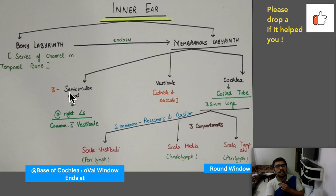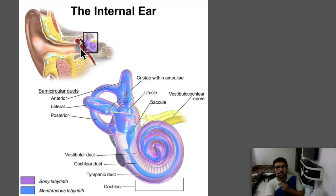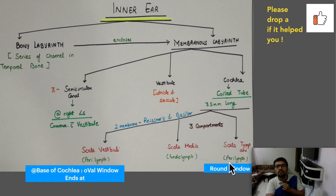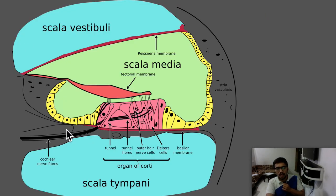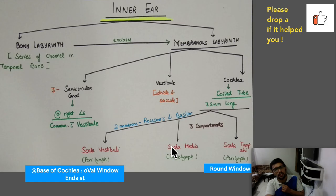The scala vestibuli ends at the oval window at the base of the cochlea approaching the middle ear — 'V for vestibuli, V for oval window.' The scala tympani ends at the round window. So in the bigger picture you have the oval window associated with scala vestibuli and the round window associated with scala tympani.